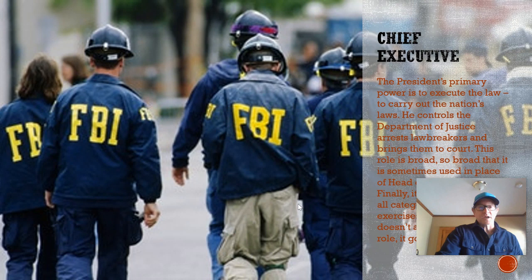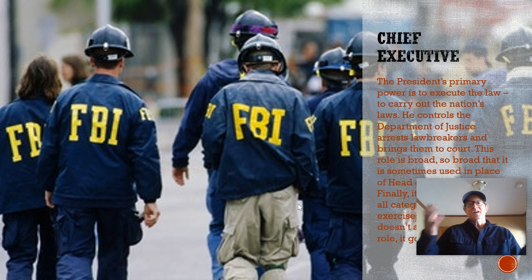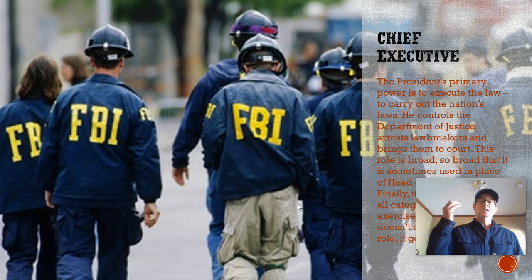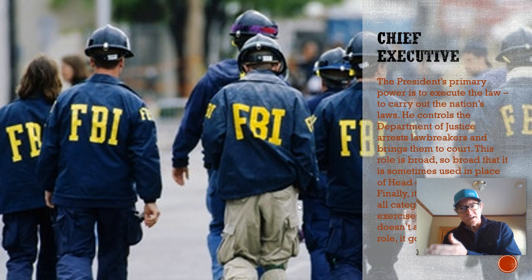Chief executive: the president's primary power is to execute the law — environmental laws, tax laws — putting them into action and enforcing federal laws, which may mean arresting people and bringing them to court. The president controls the Department of Justice, the tool by which we charge people with violations of national law. Chief executive is a broad category — so broad that some use it in place of the head of government umbrella. It's also a catch-all: if the president exercises constitutional power we can't align with another role, we place it here.